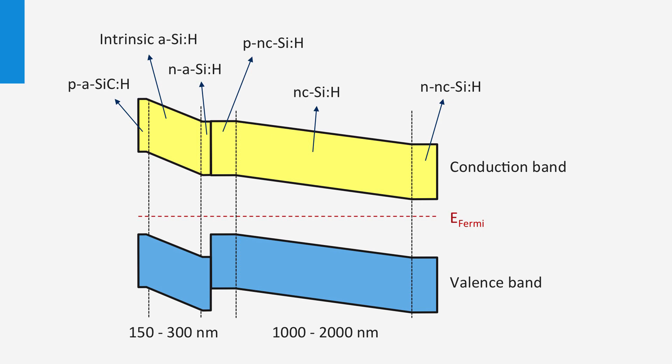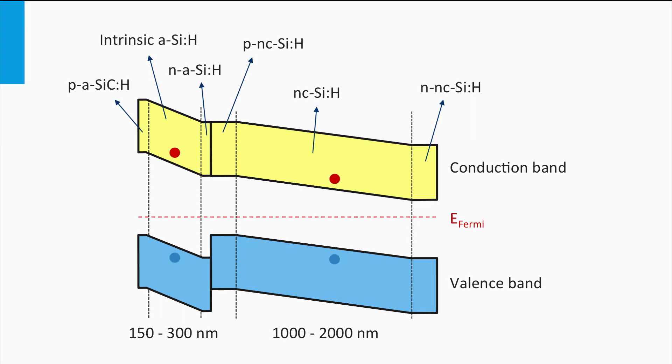Let's consider the two electron-hole pairs excited in the top and bottom cell. The hole generated in the amorphous top cell moves to the p-layer. The electron excited in the bottom cell drifts to the n-layer. Both can be collected at the front and back contacts.